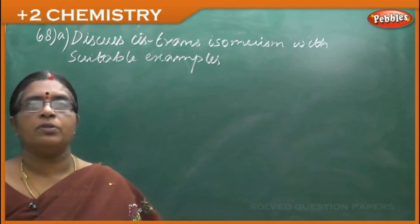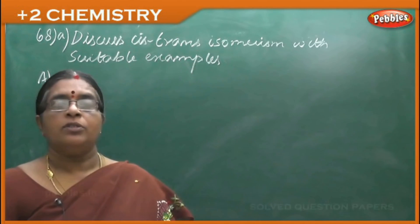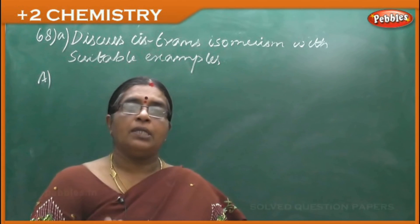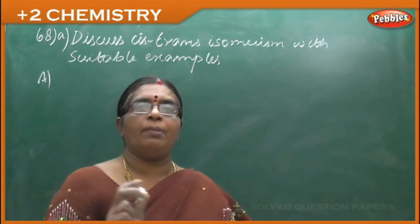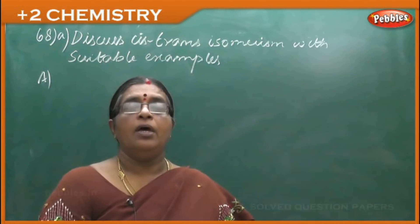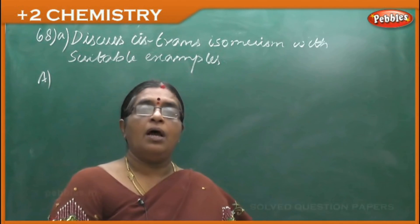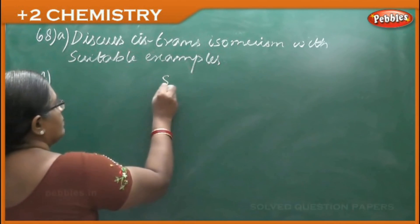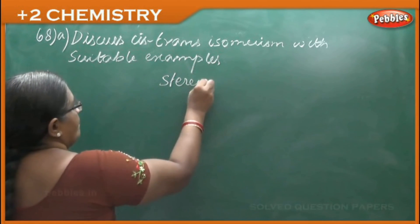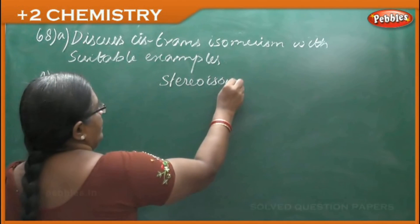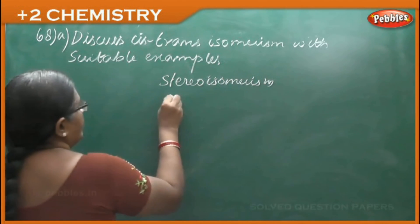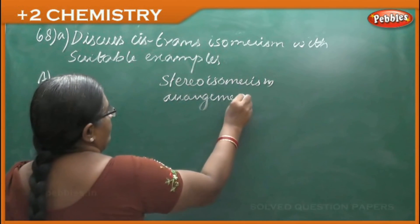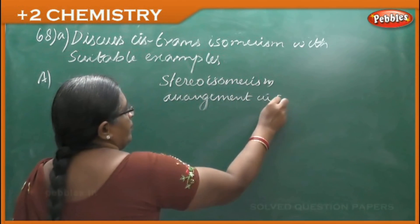Isomerism is divided into structural isomerism and stereoisomerism. Structural isomerism depends upon the arrangement of atoms — that is, what ligands are attached to the metal ion. Stereoisomerism means arrangement in space, or three-dimensional structure.